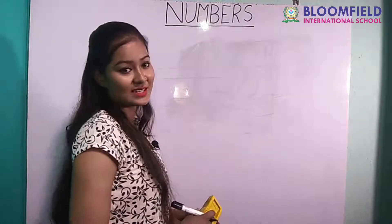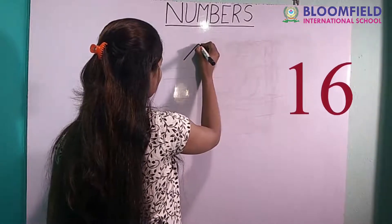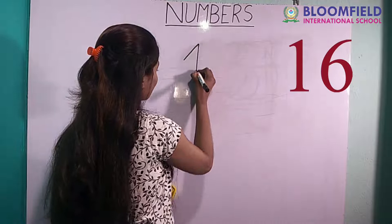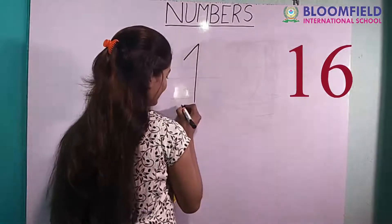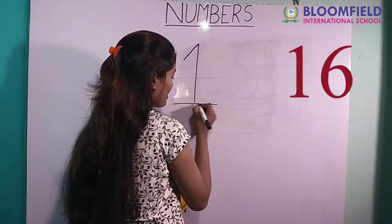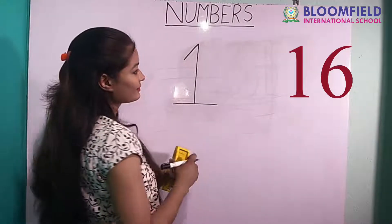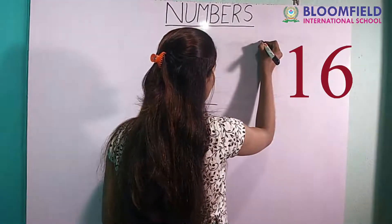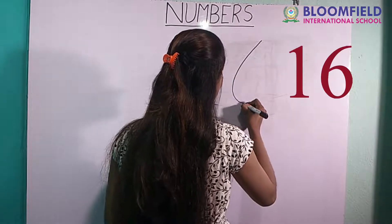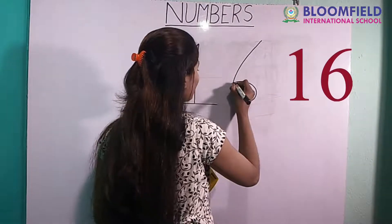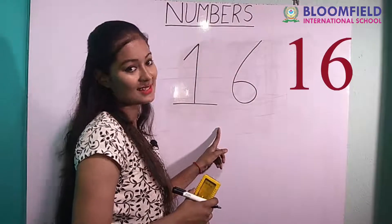Next: slanting line. One, standing line, and small slipping line. One one — slanting line, then curve. One six. Sixteen.